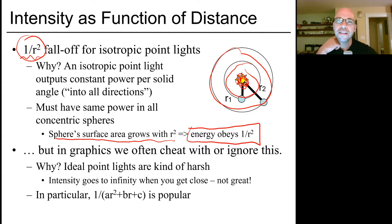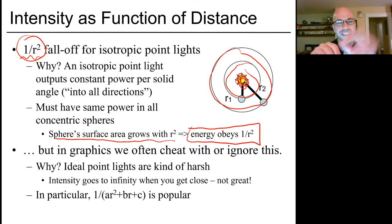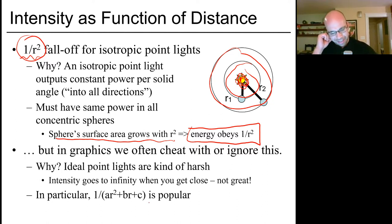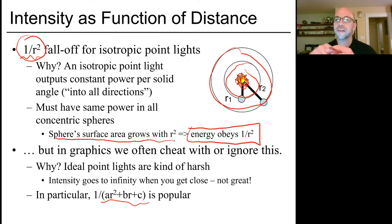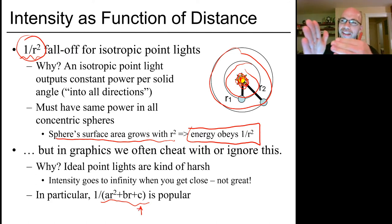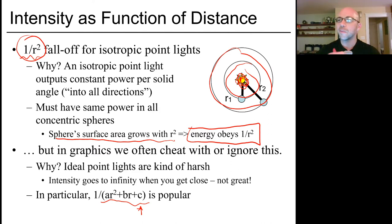In practice, to avoid really harsh lighting, we may hack that formula a bit. A typical thing to do is multiply your light by something like 1 over a quadratic in r. If we make a constant c slightly positive, then as r approaches 0, at least the light intensity won't blow up — which may be desirable depending on your application.